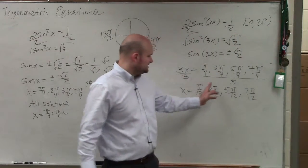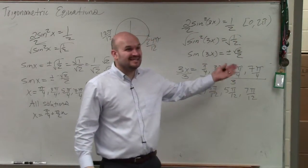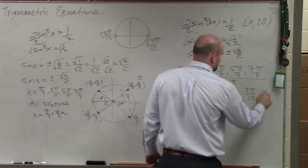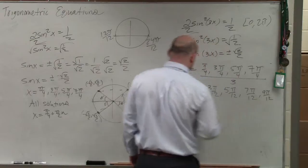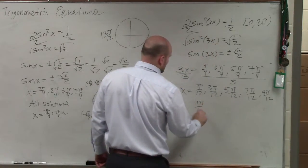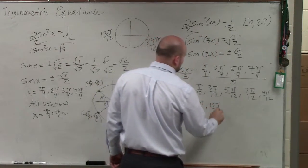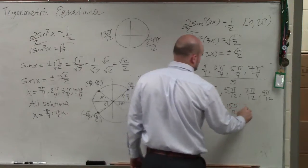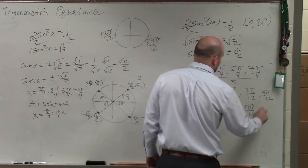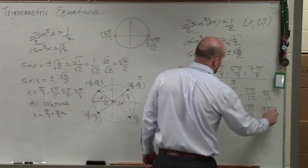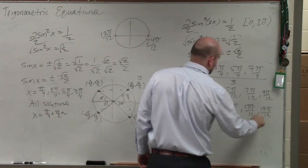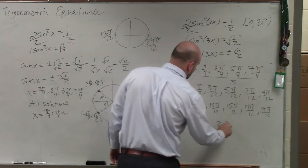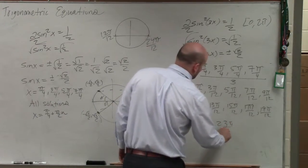So if you guys look at the difference here, you keep on adding 2. I can keep on going up all the way until I get to 24. So I can go to 9 pi over 12, 11 pi over 12, 13 pi over 12, 15 pi over 12, 17 pi over 12, 19 pi over 12, 21 pi over 12, 23 pi over 12.